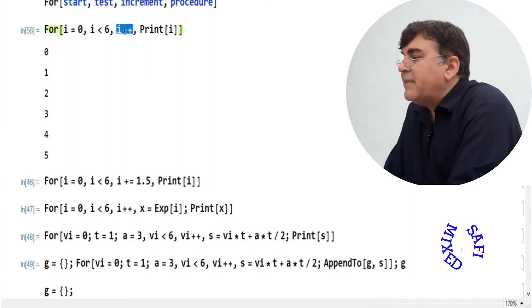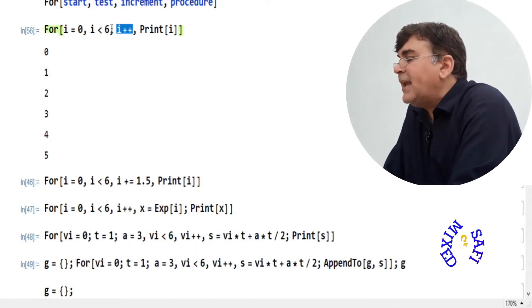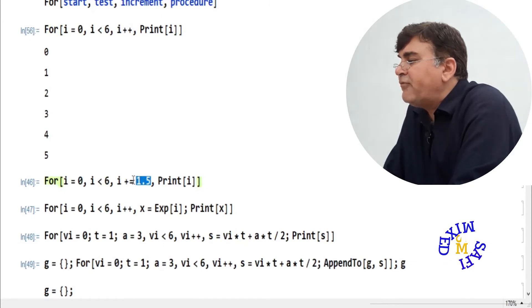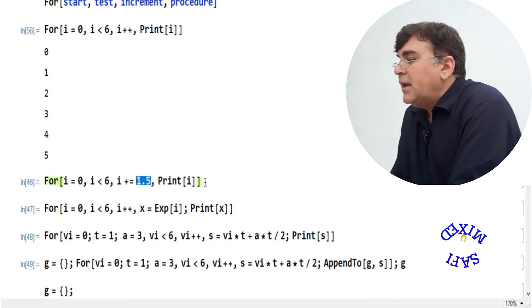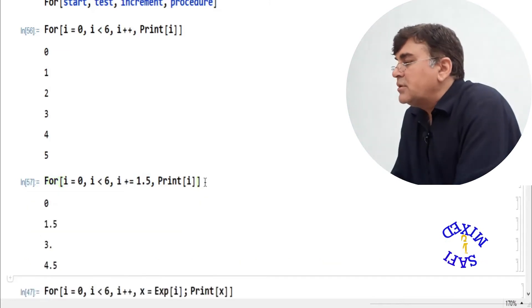Now it is crucial to understand, is it necessary to use the increment in this form? The answer is of course no. We can use any value of the increment. For example, here in the second case I used the increment value to be 1.5. That is, I ask Mathematica to increase the value of the iterator by 1.5 in each step. If I run this loop, I get 0, 1.5, 3, and 4.5.